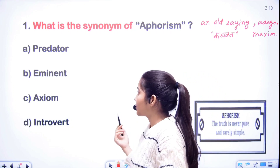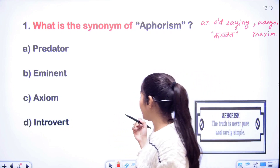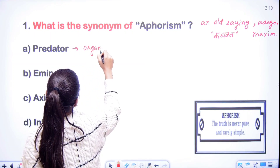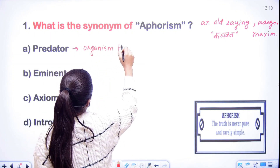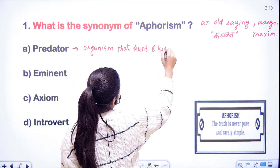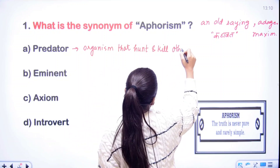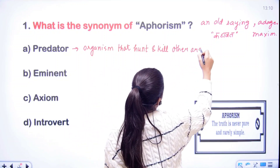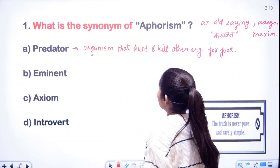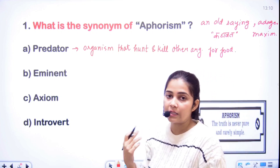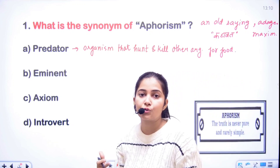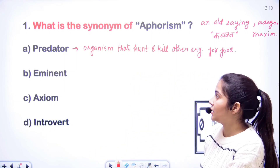Let's look at its options. First option is 'predator'. Predator होता है an organism that hunts and kills other organisms for food — यानी कि जो organism दूसरे organism को hunt करके, kill करके मार कर खाता है. जैसे शेर हिरन का शिकार करता है, so predator उसके लिए होता है.